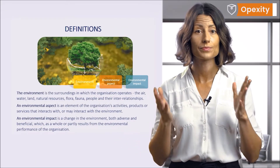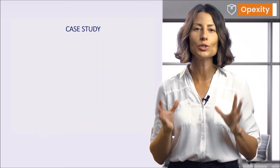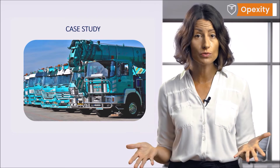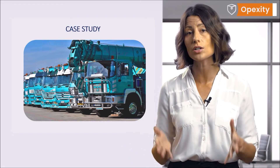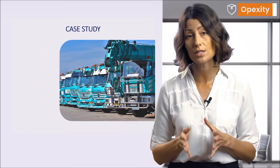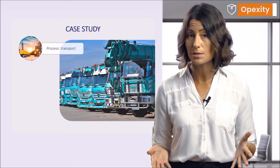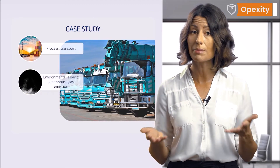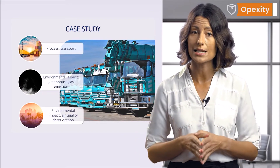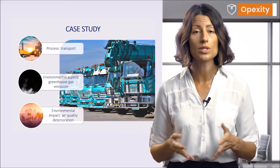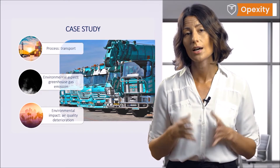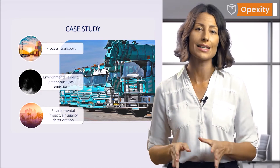Let me give some examples. Imagine you are the president of the management board of a transportation company. You have a huge fleet of cars and your trucks drive hundreds of thousands of kilometers per month. The process to be analyzed is transport. The environmental aspect is the emission of greenhouse gases, and the impact on the environment is air quality deterioration. Another environmental aspect may be the use of liquid fuels, and the associated impact will be the use of limited natural resources.